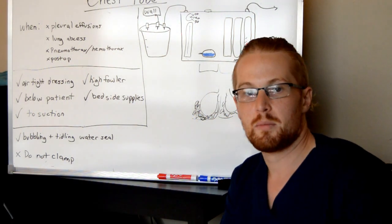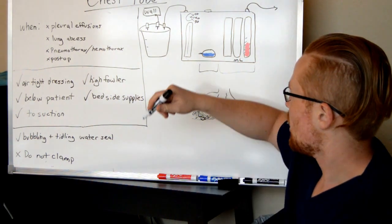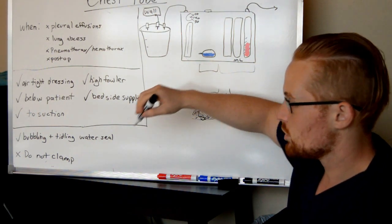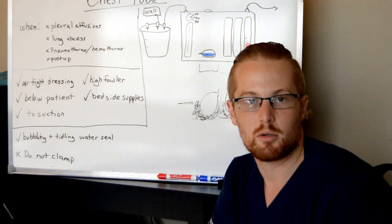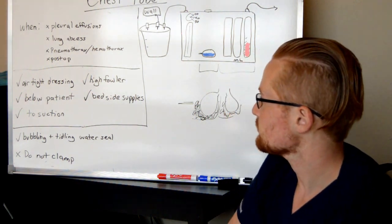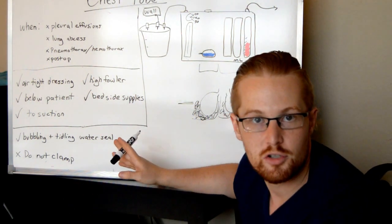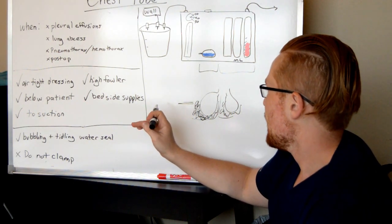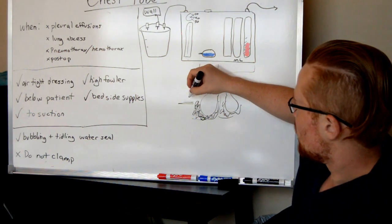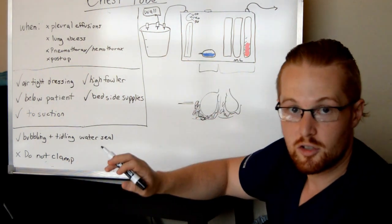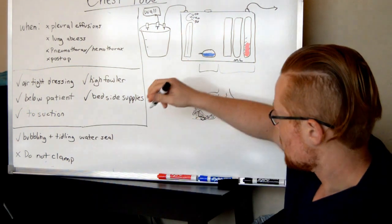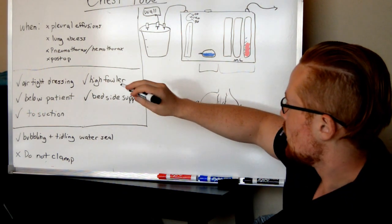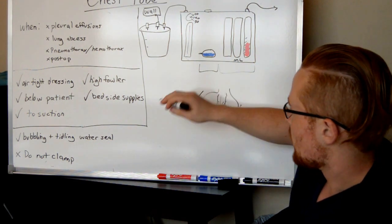And the other reason would be maybe post-op. If there's a patient that had, say, open-heart surgery, and the chest tube's in the place to pull out any drainage or blood from the healing process. What they'll do is they'll put it, if it's liquid, such as blood or abscess, they're going to be putting the tube in a little bit lower, aiming down, and if it's air, they're going to aim the tube up just because air rises.